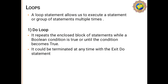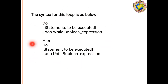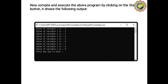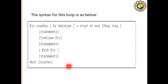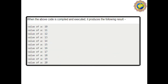In the previous video lecture, we already covered the loop concept. First was the Do loop — its flowchart, description, and syntax for the Do While loop, then an example of Do While loop with its output. The second loop was the For Next loop — its flowchart, syntax, example, and output.